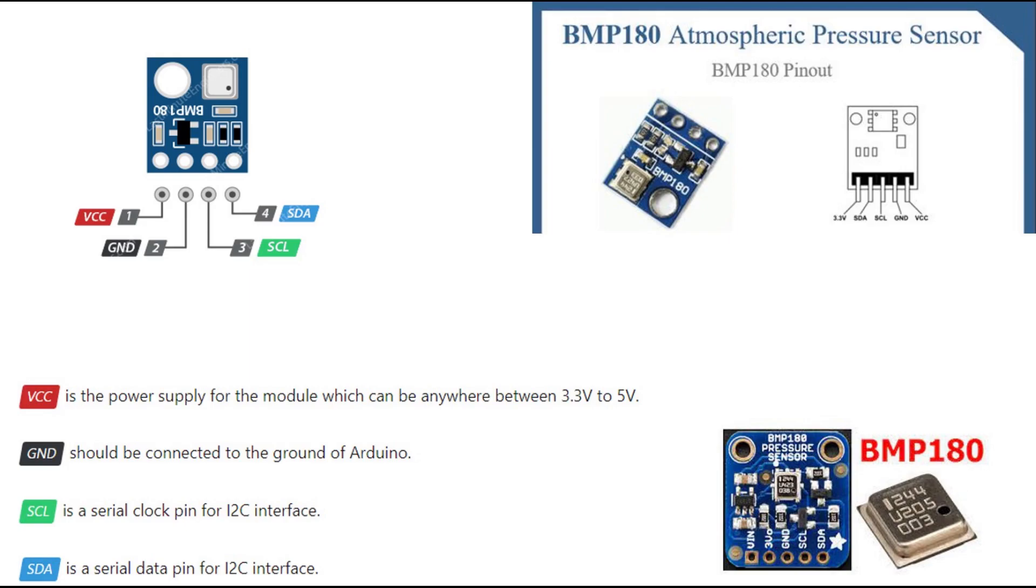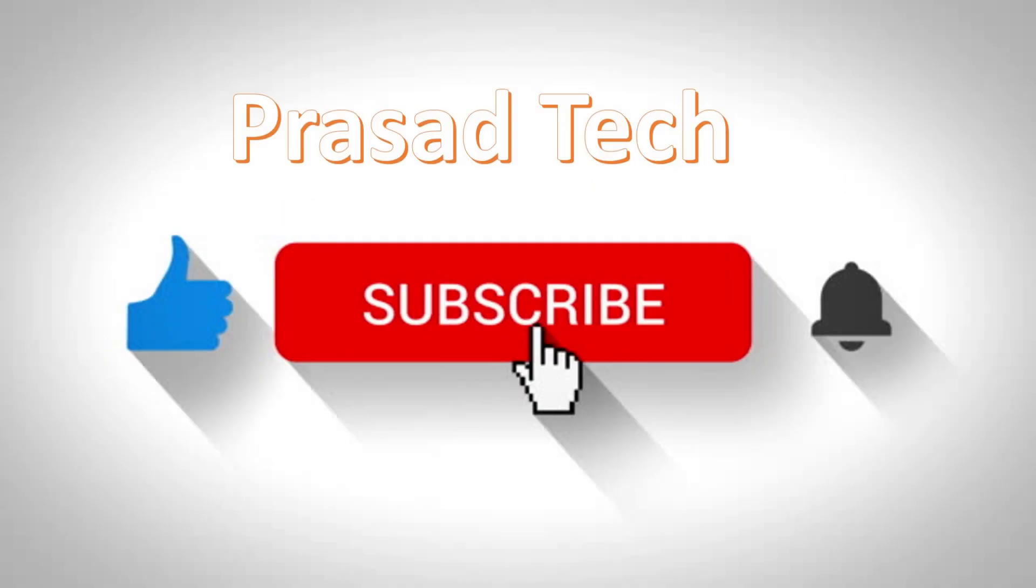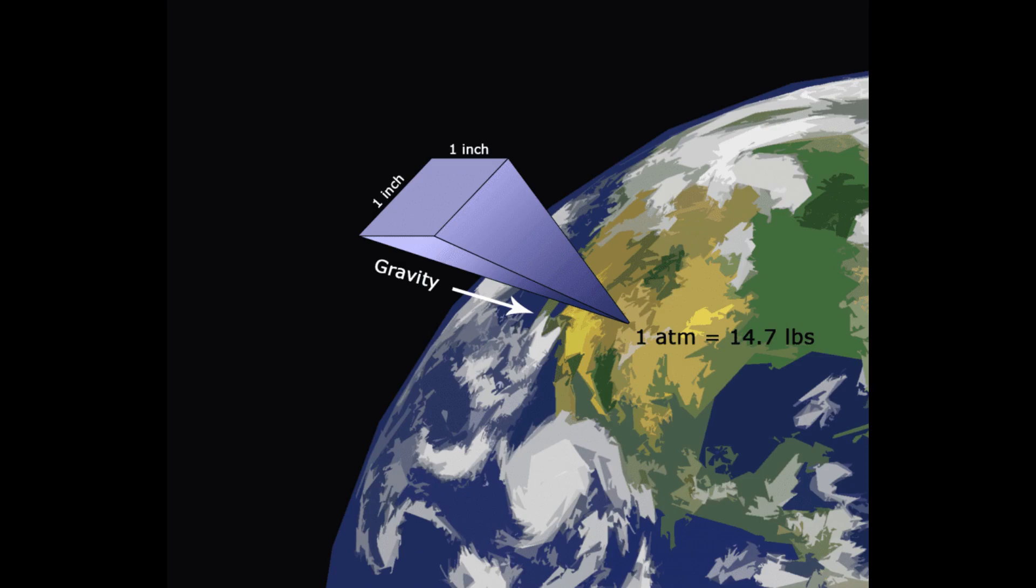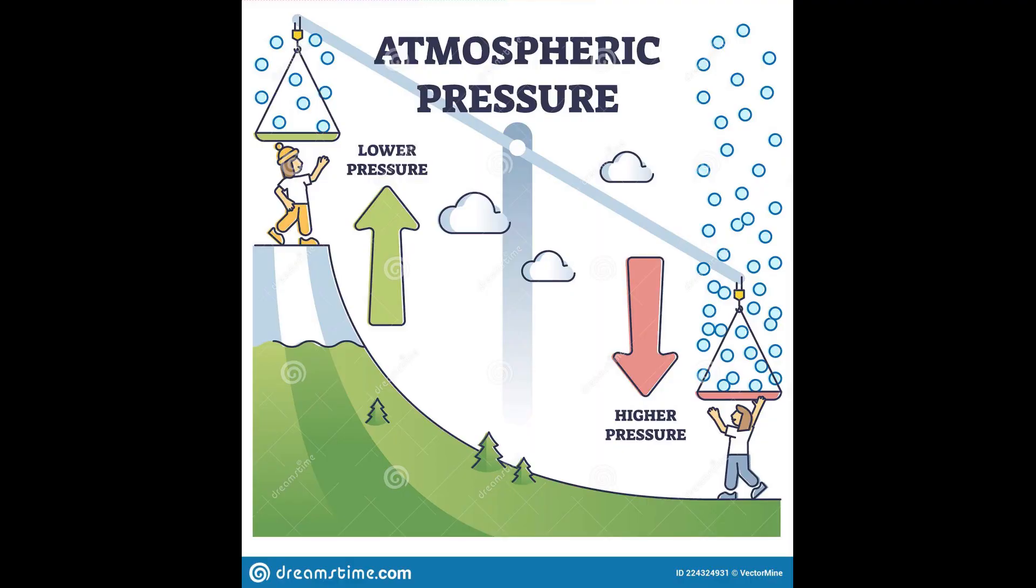BMP180 Barometric Sensor: This precision sensor from Bosch is the best solution for measuring barometric pressure and temperature. It is an ultra-low-power digital temperature and pressure sensor with high accuracy and stability. Because pressure changes with altitude, you can also use it as an altimeter. It measures the absolute pressure of the air around it. It has a measuring range from 300 to 1100 hPa with an accuracy down to 0.02 hPa. It can also measure altitude and temperature.